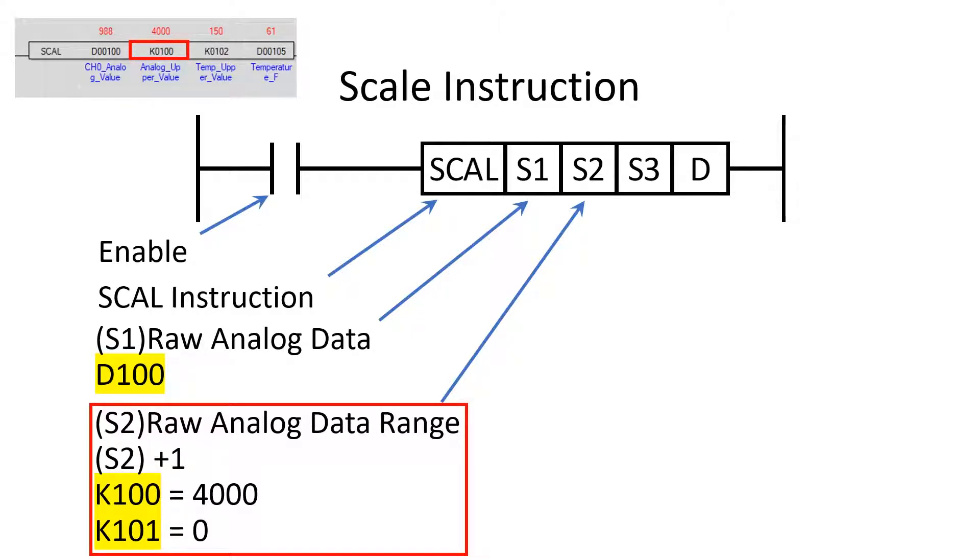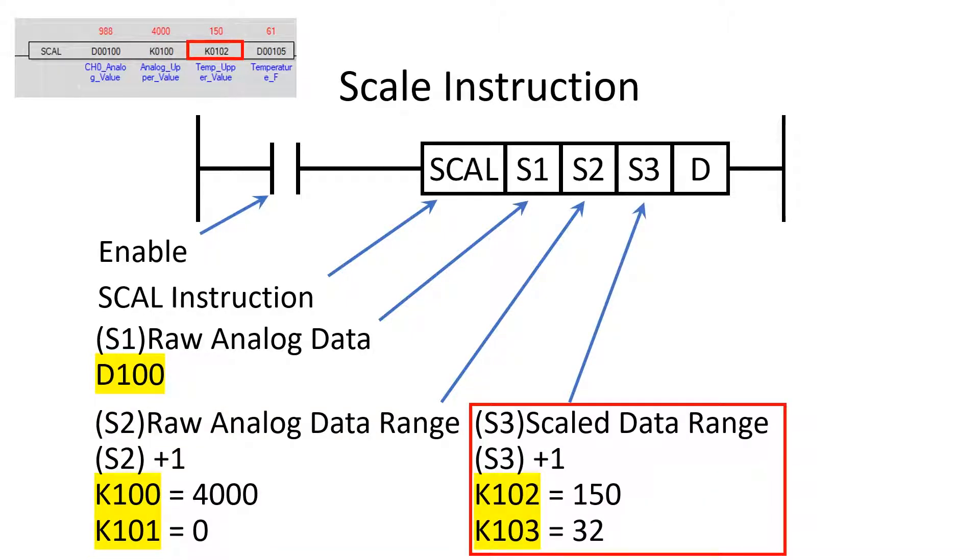S2 plus 1 is the memory location for the lower value of the raw analog range. The S2 locations are K100 and K101 for the range of 0 to 4000 counts.